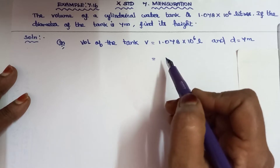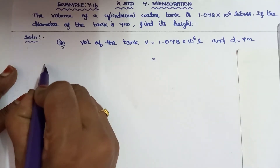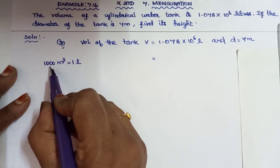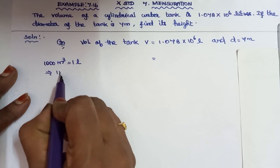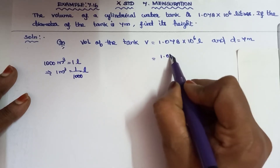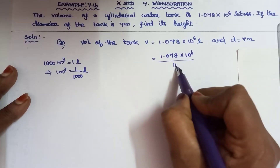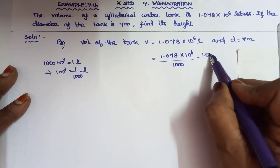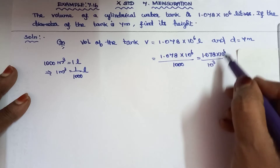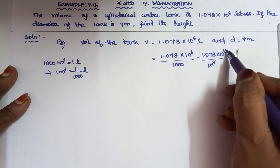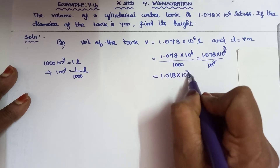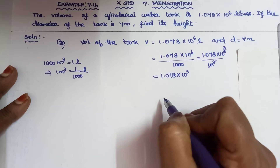Converting the volume: 1 liter equals 1/1000 cubic meters. So 10 to the power 6 liters — using 10 power 3 over 10 power 3 — equals 1.078 into 10 power 3 cubic meters, which is 1.078 into 1000, giving us 1078 cubic meters.